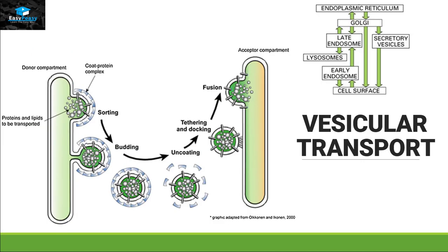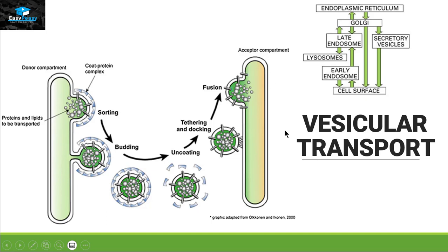The third type of transport is vesicular transport, which occurs from the endoplasmic reticulum to Golgi bodies, endosomes, lysosomes, or the cell surface. In this type of transport, proteins and lipids gather close to the membrane and then bud off from that membrane. This bud travels towards the acceptor compartment, fuses with it, and releases the protein inside that acceptor compartment.